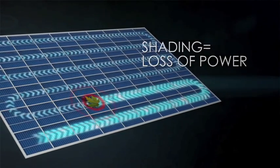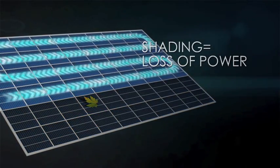For this conventional panel, partial shading on just one cell shuts down a third of the entire panel. But SunPower is designed differently.